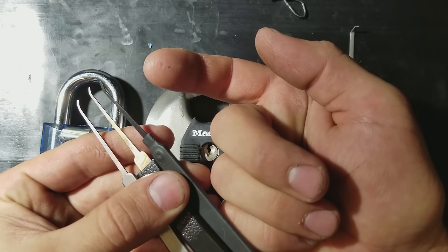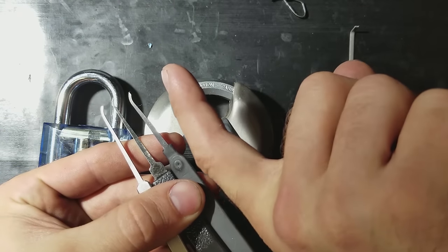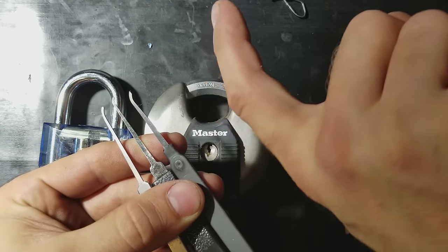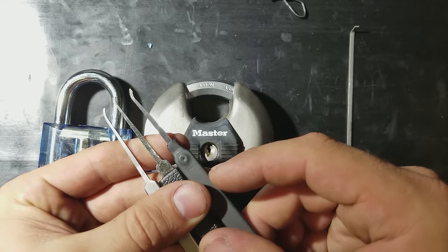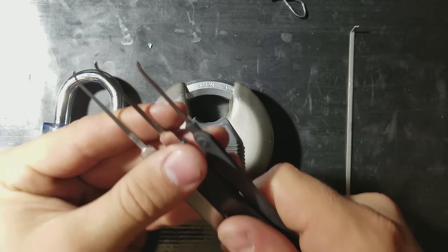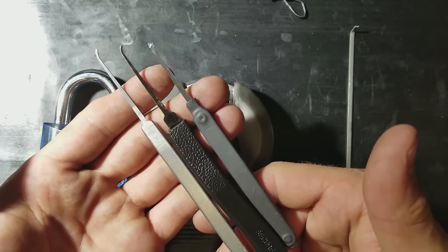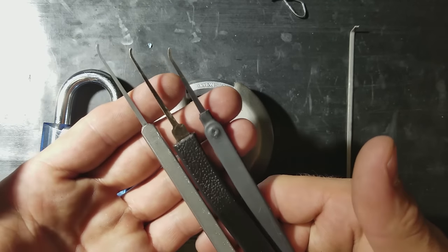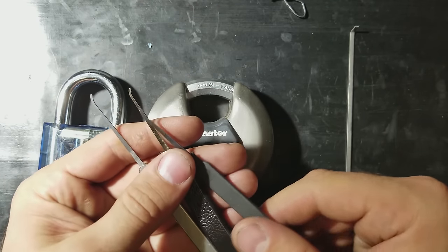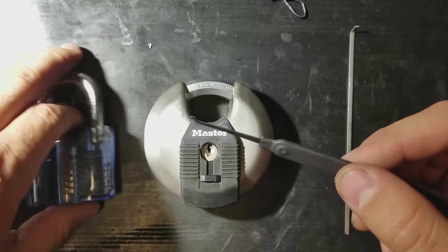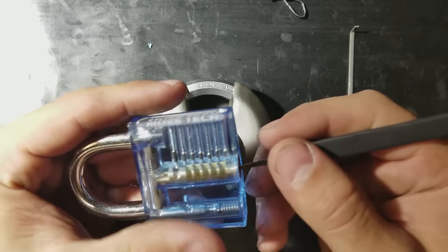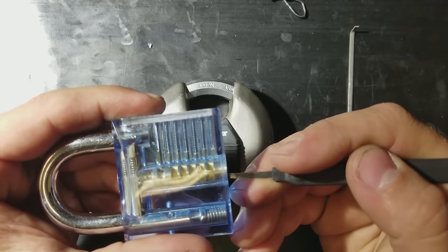Essentially, you need something with a little bit of a lifted end so that the shape is like that. And the reason for that is because you're going to push up on the pins with it. So the second misconception I want to clear up is that there's anything really special about these tool shapes. They don't need to be perfect. They don't need to be exactly the right size.